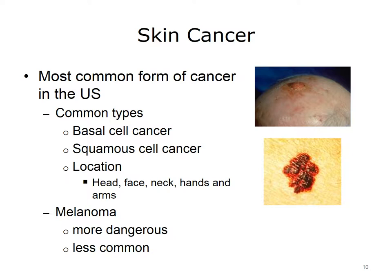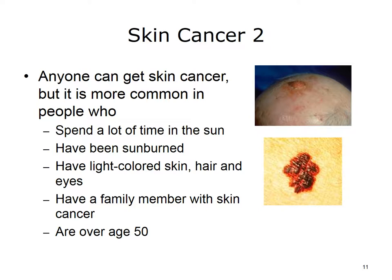The top left picture on this slide is of a squamous cell cancer of the scalp. Another type of skin cancer, melanoma, is more dangerous but less common. Melanomas are considered malignant tumors and do spread to other parts of the body. The top right picture is of a melanoma. Skin cancer is more common in people who spend a lot of time in the sun, have light-colored skin, hair, and eyes, have a family member with skin cancer, or are over age 50. Prevention involves avoiding long exposure to the sun and the use of SPF 15–30 sunscreen lotion.